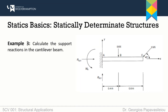Let us see another example on a statically determinate structure. Once again, we have a structure where there are only three support reactions. It is a cantilever beam, and we need to calculate the support reactions. To apply the equations of equilibrium, we would first have to analyze this inclined force into perpendicular components: a vertical and a horizontal one.